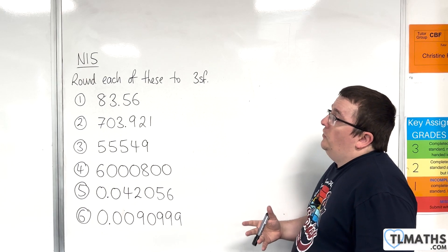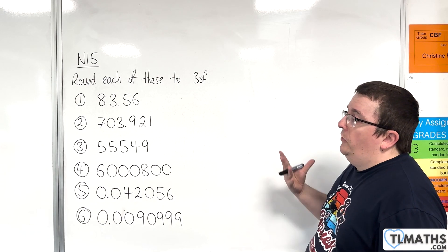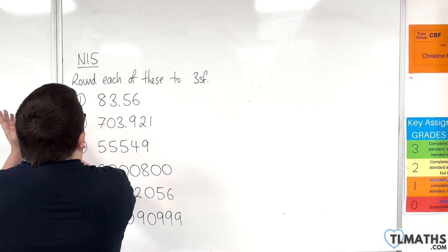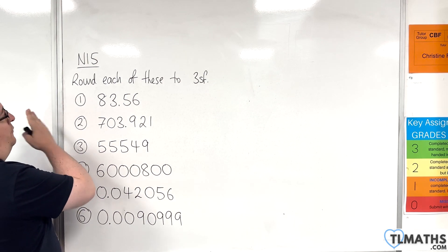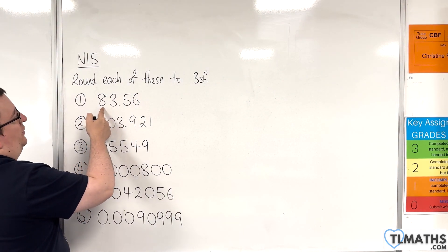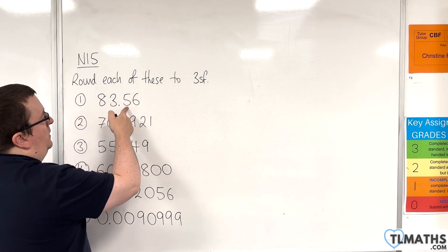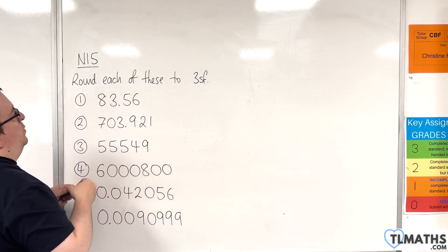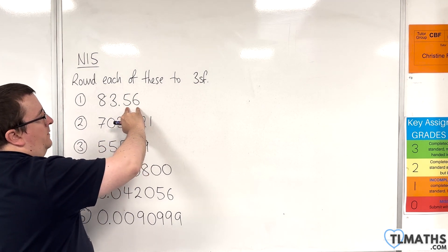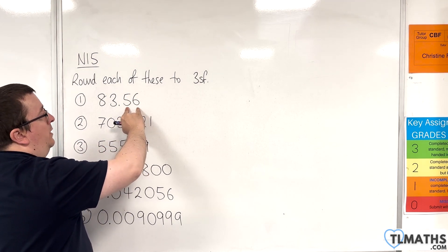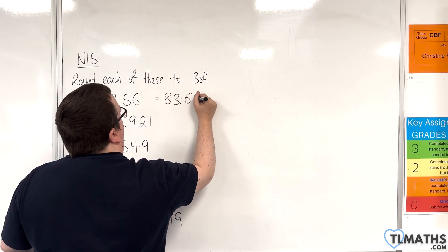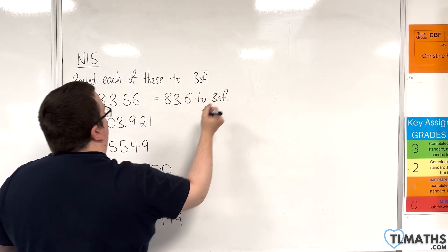In this video I want to go through some examples of rounding to three significant figures. Working from the left to the right, the first non-zero value that I hit is the first significant figure. This is the second and this will be the third. So if that's the third significant figure, look one to the right. And because it's six we round up, so this would be 83.6 to three significant figures.